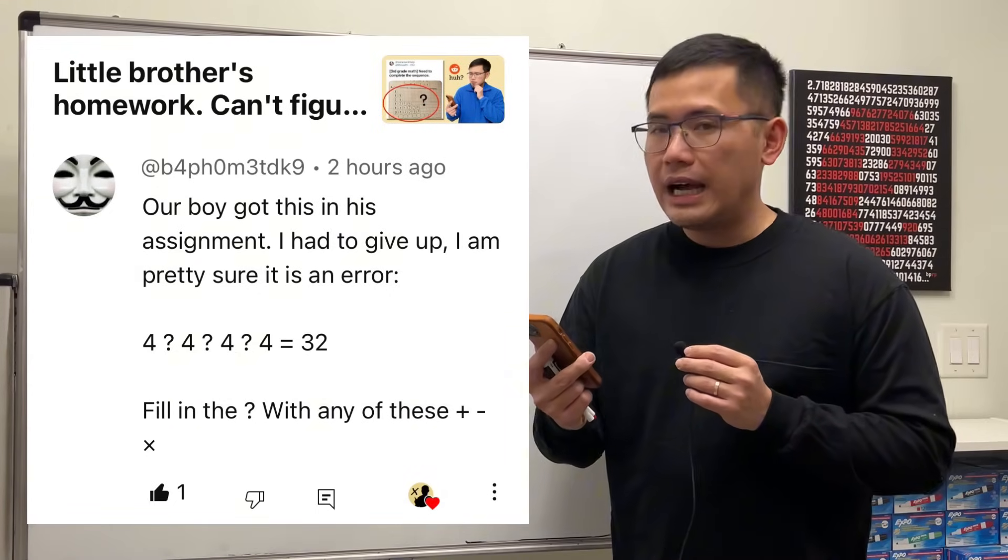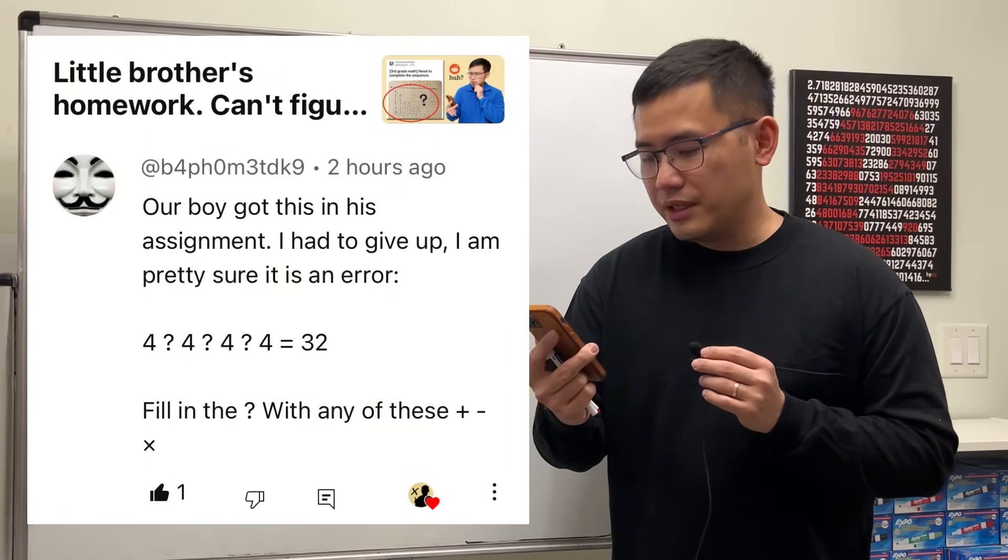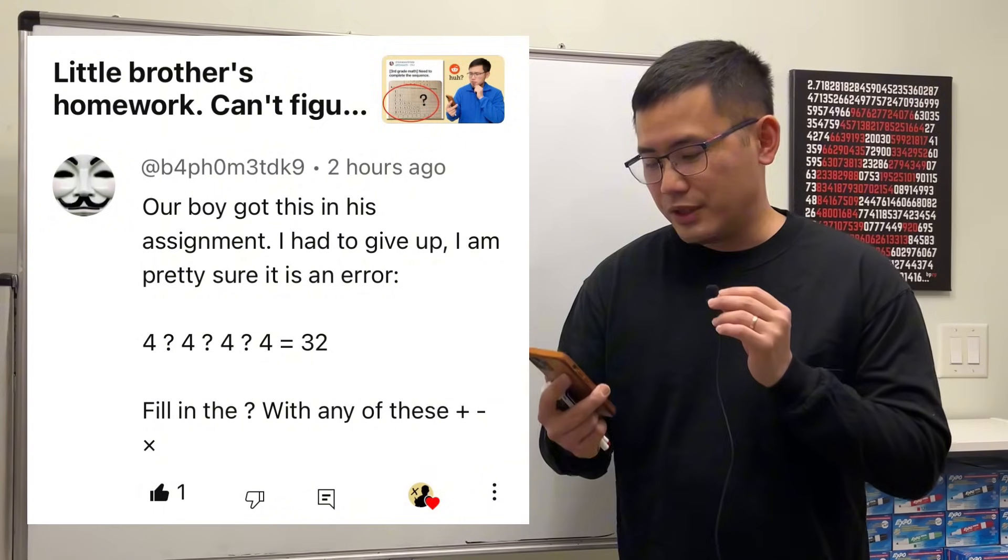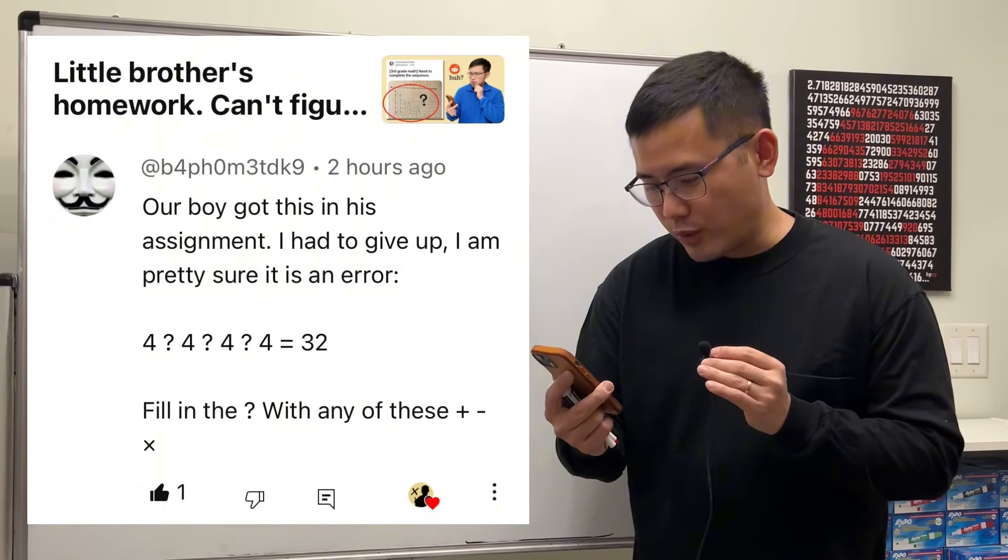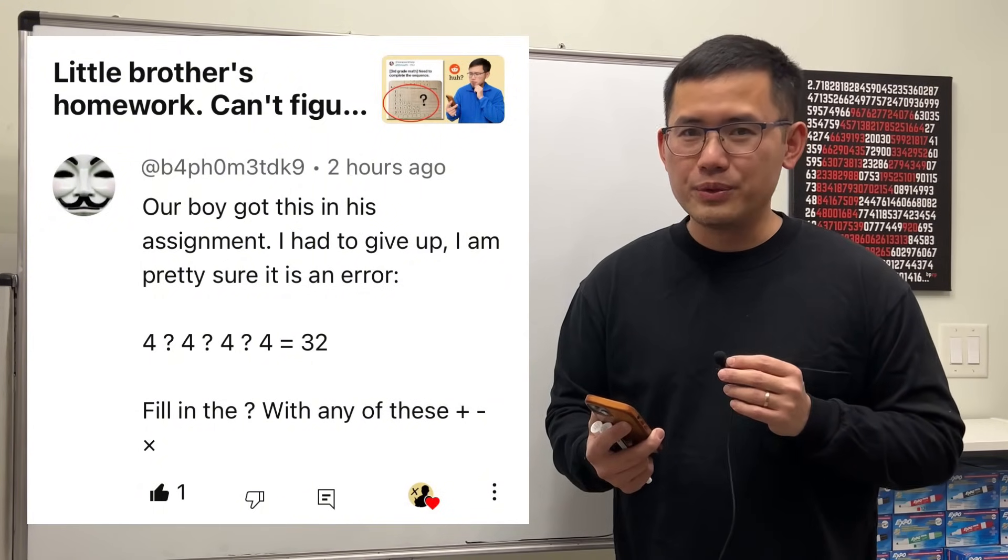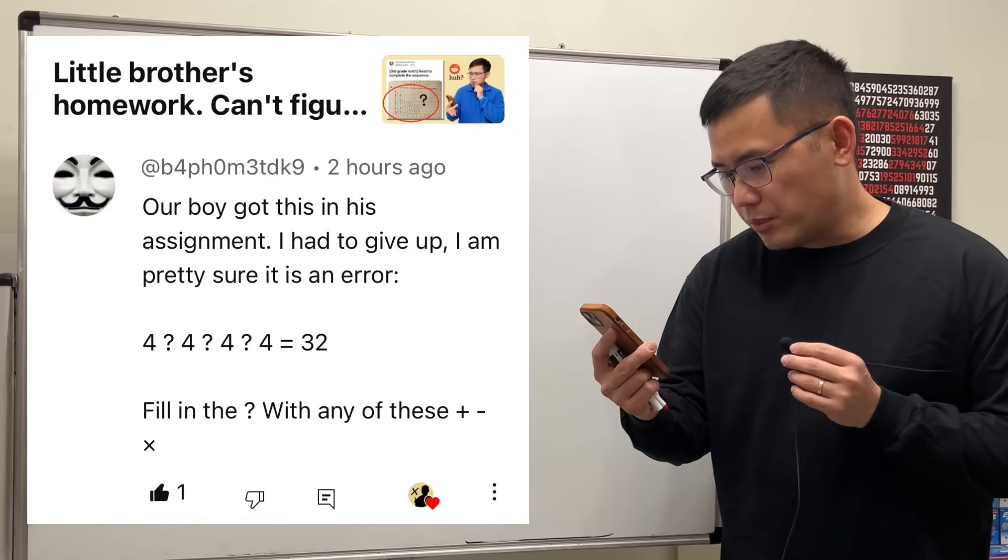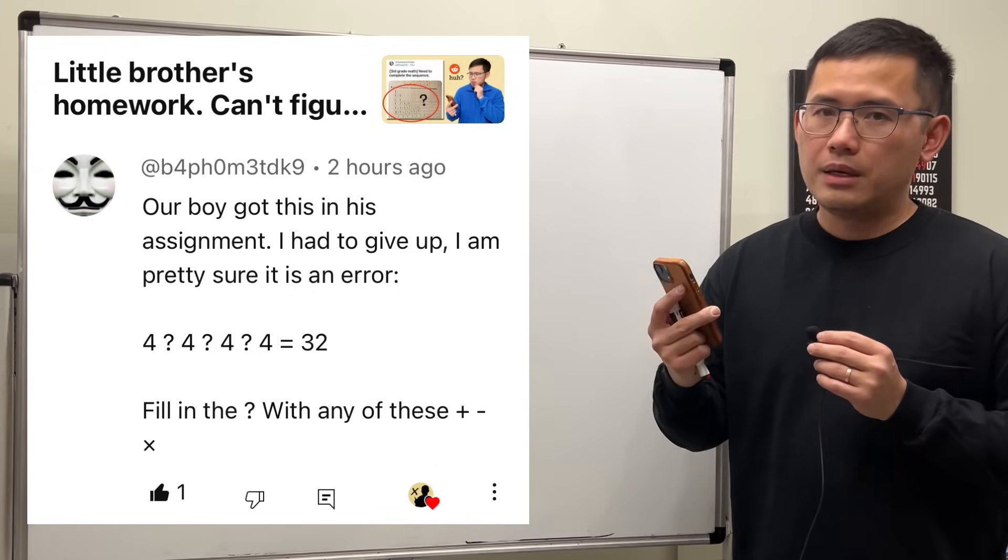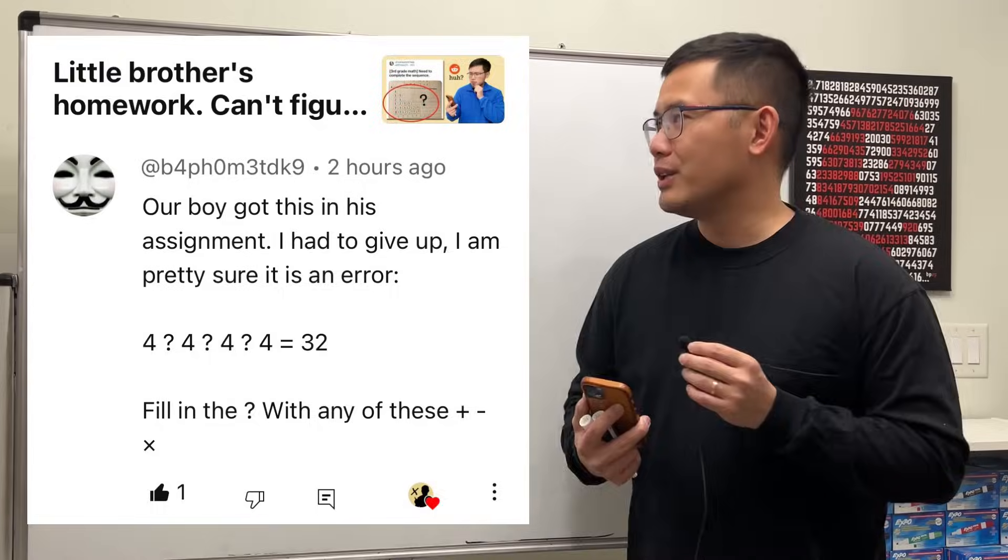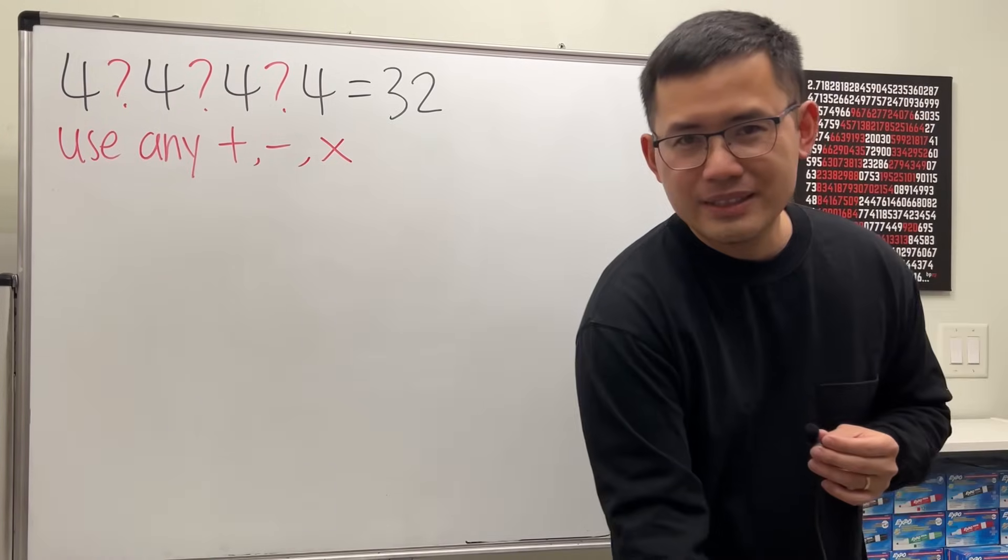Our boy got this in his assignment. I had to give up, I'm pretty sure it's an error. The question is 4 ? 4 ? 4 ? 4 = 32, and we are going to fill in the question marks with add, subtract, or multiply to make this true.